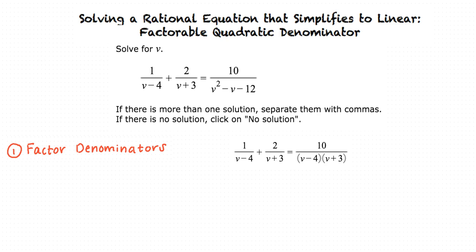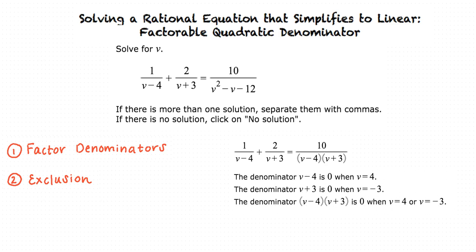Second, we will exclude all values of v that would give a denominator of 0. Why do we do this? If there is a 0 in the denominator, then the equation is undefined, and we are looking for only values of v where the equation is defined. Therefore, we can set each of the denominators equal to 0 and solve for v for the values which we must exclude from our answer.